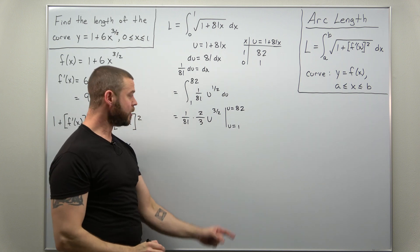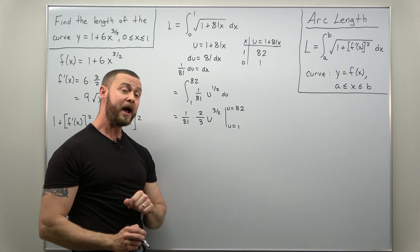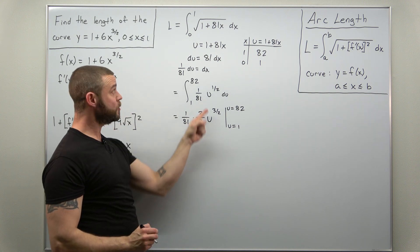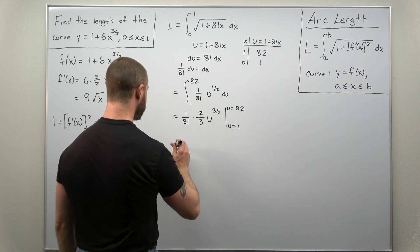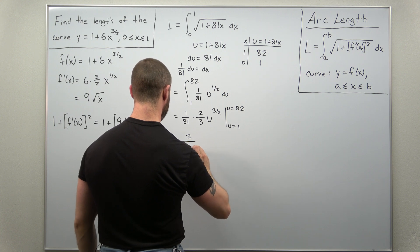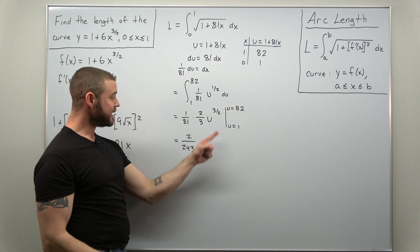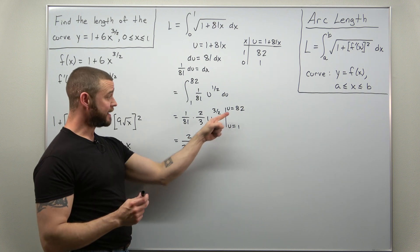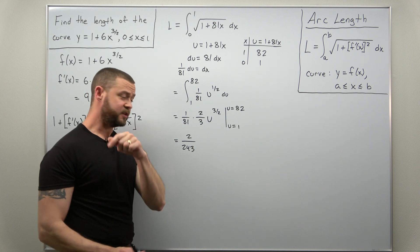And worth pointing out, if you change or convert your limits, you don't have to ever back substitute u in terms of x here. If you simplify your fractions, looks like you're going to get that to come out to 2 over 243. And we just evaluate that u to the three halves with u equals 82 and then subtract when u is 1.